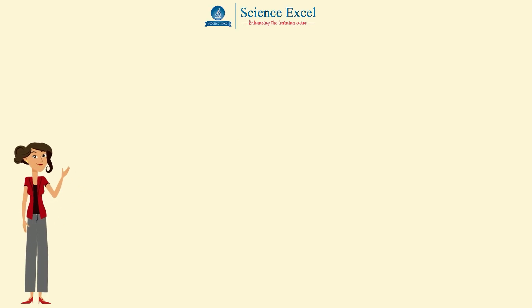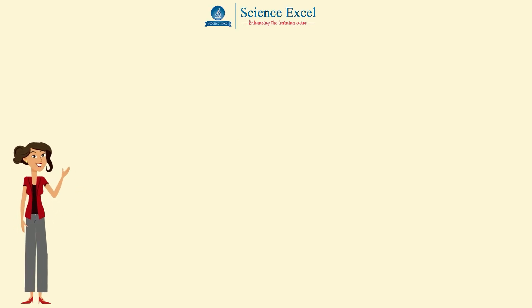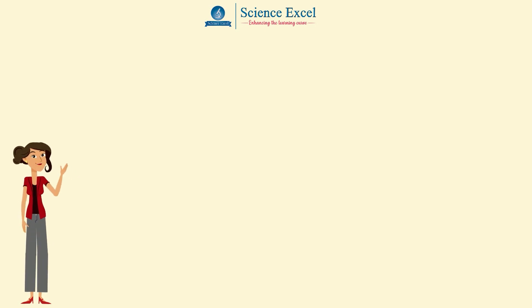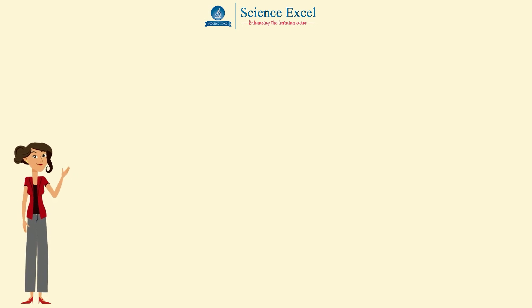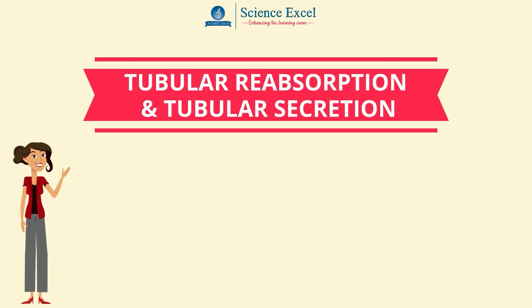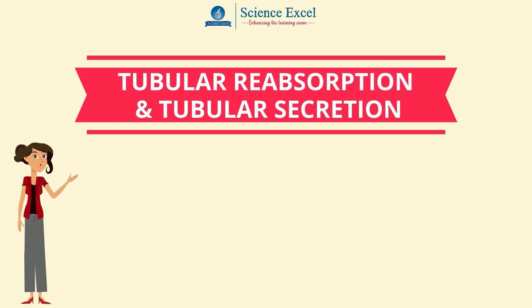In our previous tutorial, we explored the process of ultrafiltration in the glomerulus. This tutorial introduces you to the next steps in the production of urine, namely tubular reabsorption and tubular secretion.